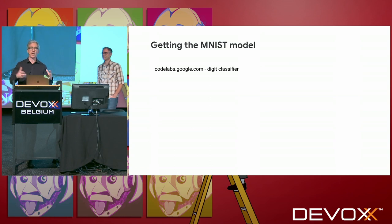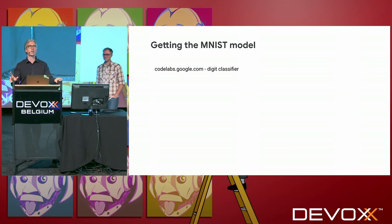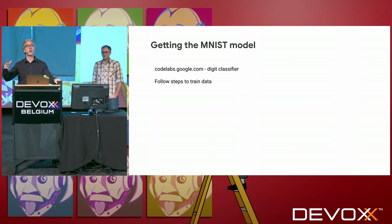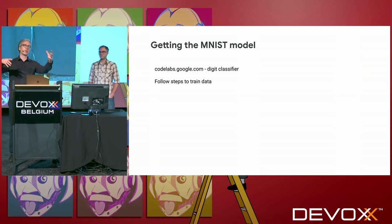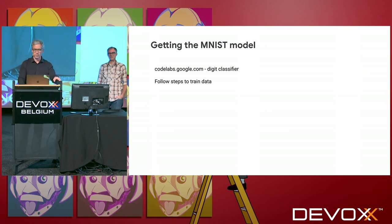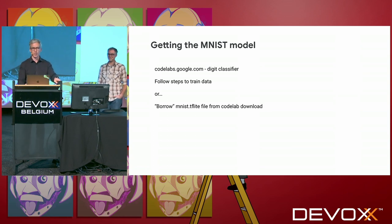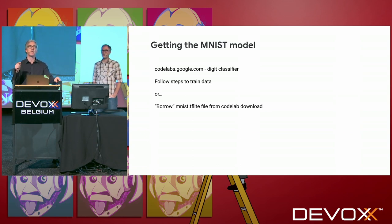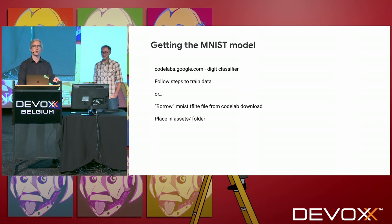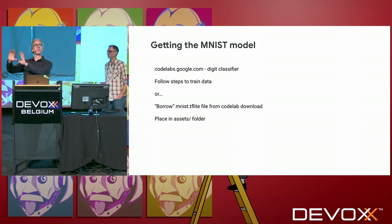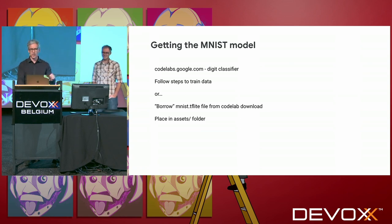You need to get this data — it's not there automatically. There's actually a code lab at Google built around the MNIST data called Digit Classifier. You can go to the code lab site, walk through the steps to train the data, send it off to the cloud, get the data from the MNIST site, run all the training stuff, and get the model out. Or — and I'm just putting this out there as an option, because I am a software developer and I am lazy — you can simply go to the code lab and grab the model it already built. If you go to the final step, it has the TF Lite model produced through all the previous steps. So we went there, grabbed the model, downloaded it, put it in the assets folder. Software is about reuse.